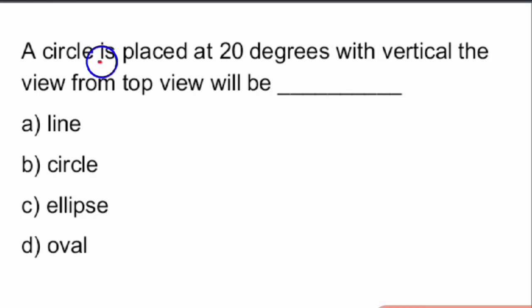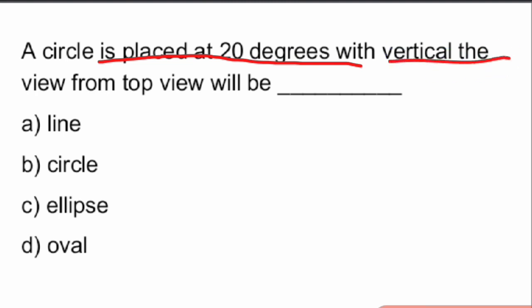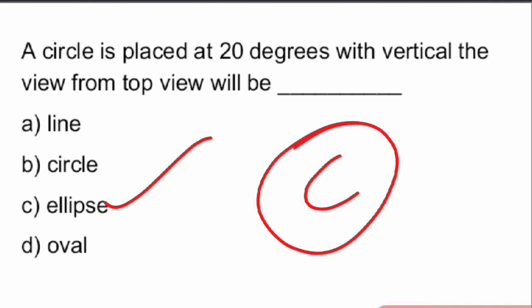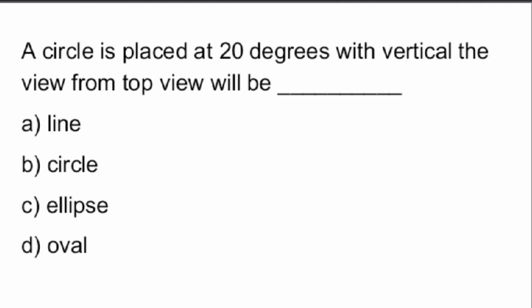Next question: a circle is placed at 20 degrees with the vertical plane — what will the top view look like? Since the circle is placed at an angle, we view the circle as an ellipse from the top view. Option C, the view of the circle will be an ellipse.